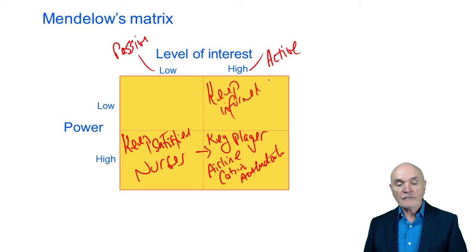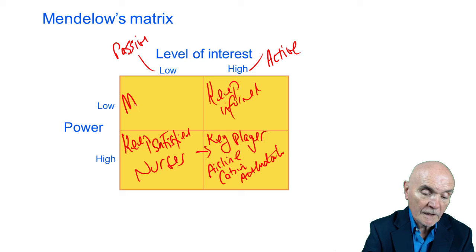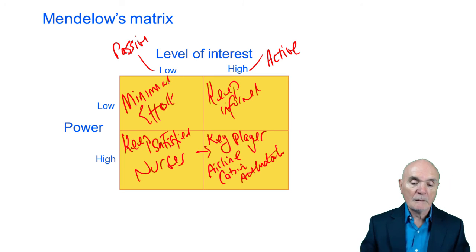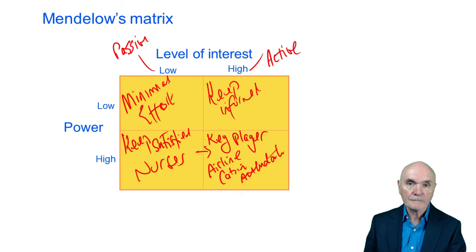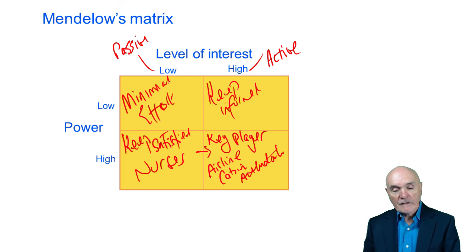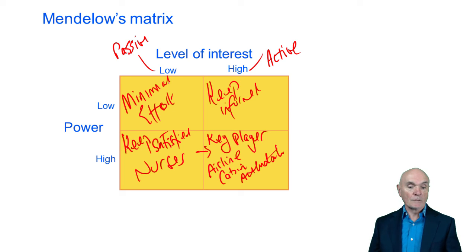Finally, we have low level of interest and low power. Normally what this is regarded as is minimal effort — almost a polite way of saying ignore. They haven't any power, and they're not interested anyway, so they're not going to make a fuss of any sort.